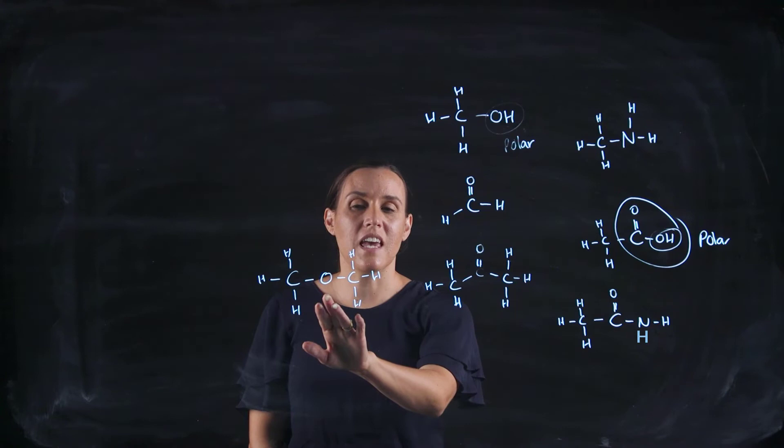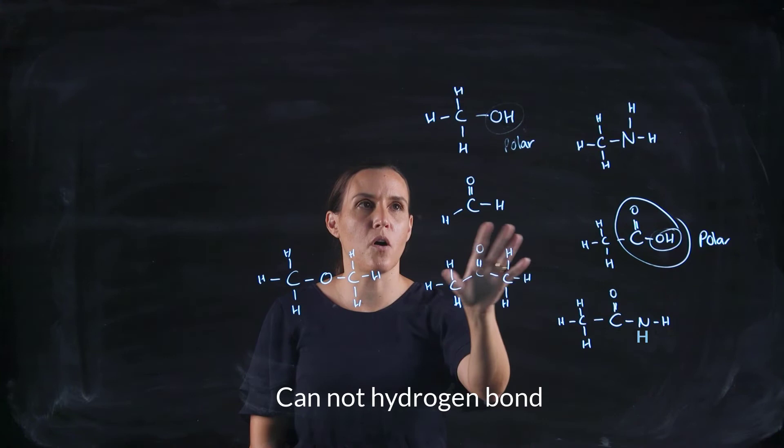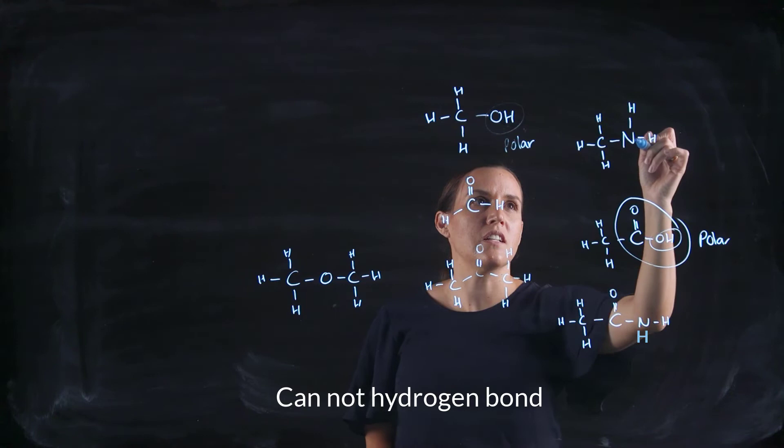The ether again is very hindered; it probably wouldn't be able to do anything there. It's blocked, so this will be very non-polar. This would be slightly polar; these are very polar with our nitrogen.